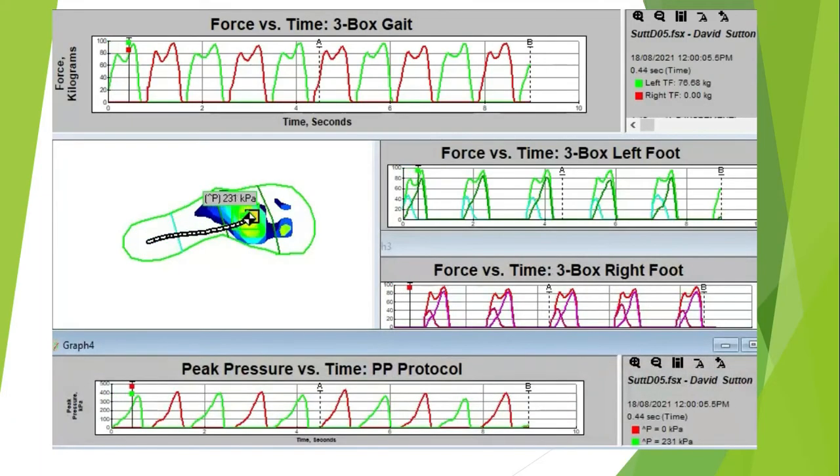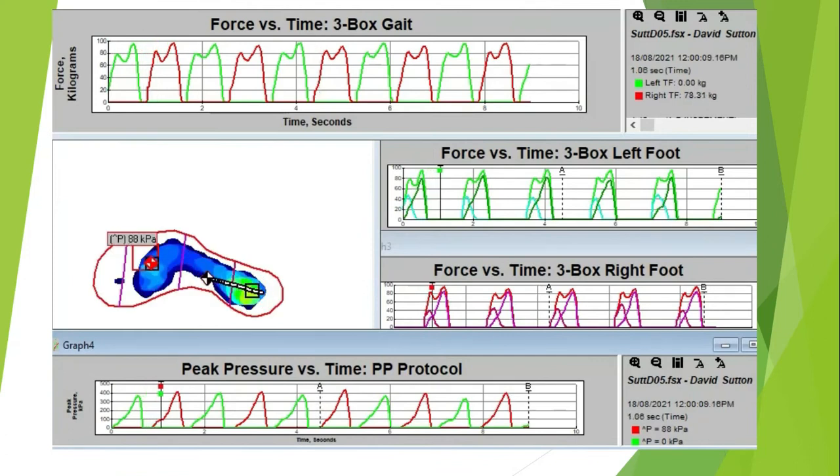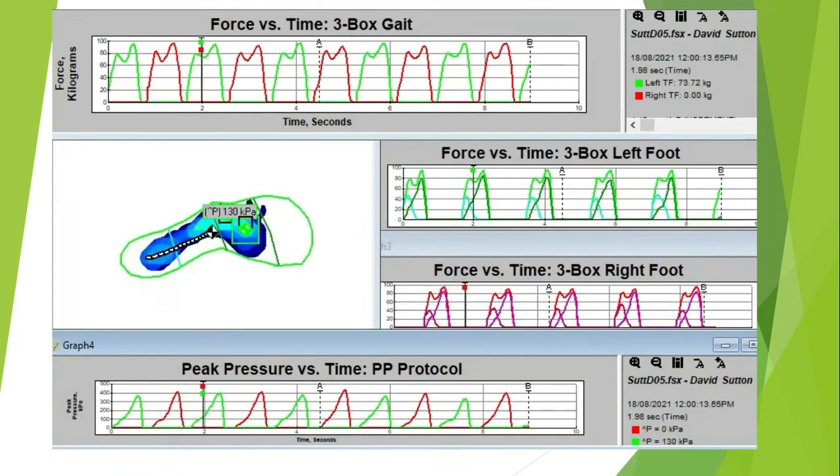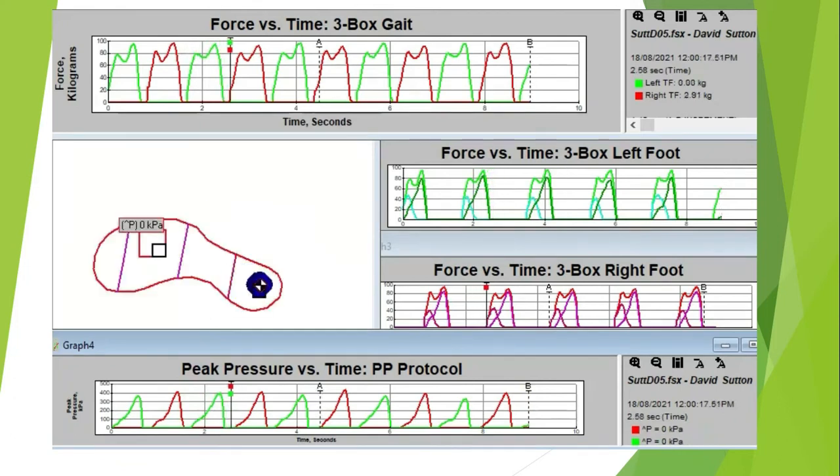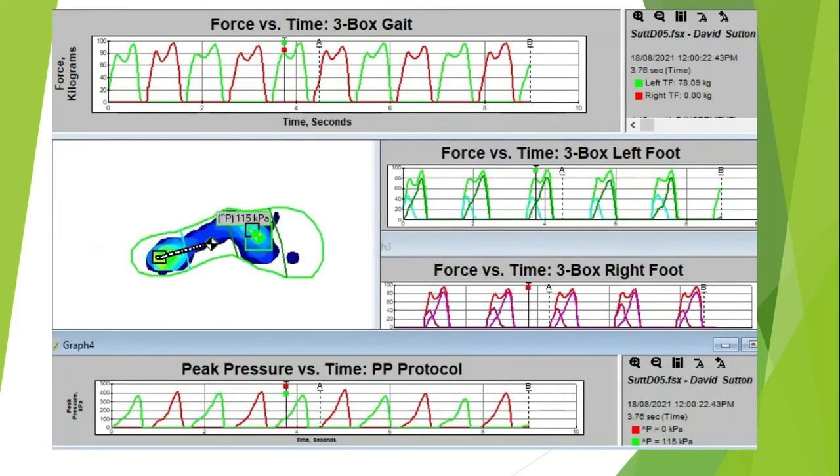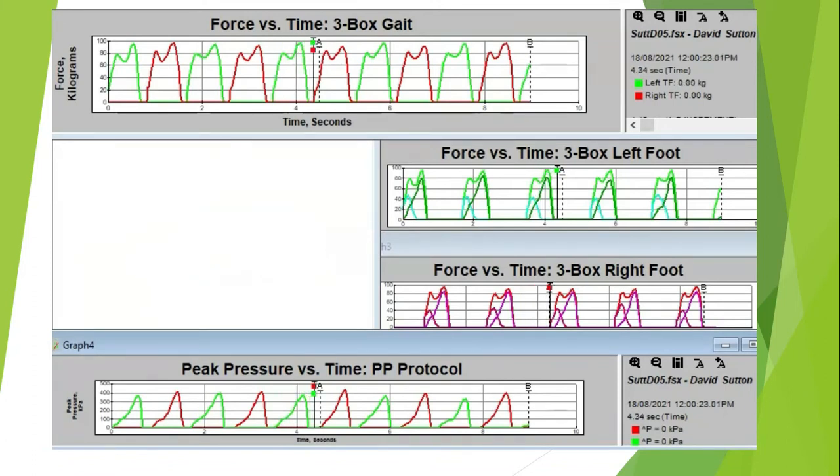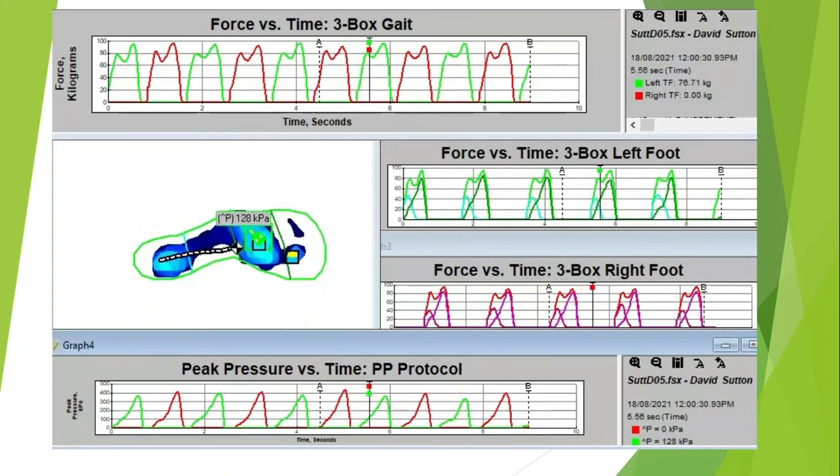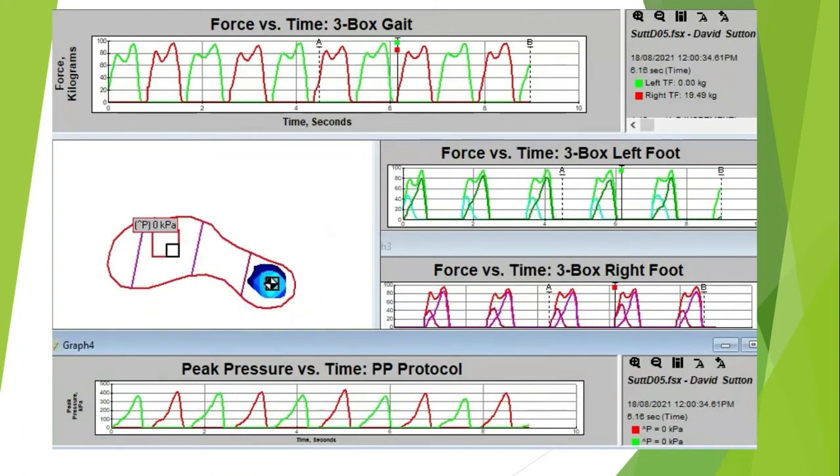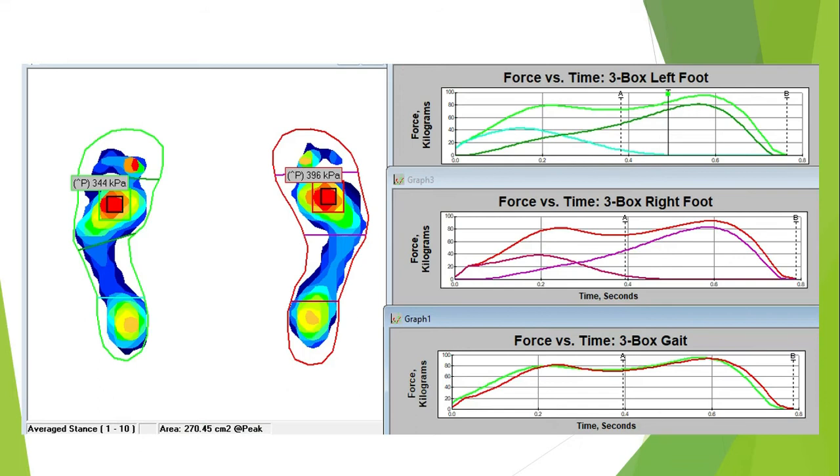So this is the data and you would get a live feed as well as a recording. You can see at the top of this screen, the ground reaction force for the left is green and the right is red. To the mid screen to the right is the ground reaction force in three box protocol. You can see the heel is separated from the forefoot in that particular graph. And down the bottom is the peak pressure timing, and that's in the metatarsal area.